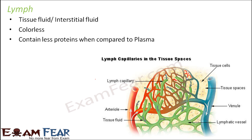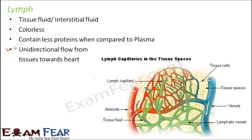So lymph is not a different fluid altogether — it is just a portion of plasma which leaks out from the thin capillaries into the tissue spaces. Lymph has a unidirectional flow, from tissues to the heart. In contrast, blood flow is bidirectional: oxygenated blood flows from the heart to different tissues of the body, and deoxygenated blood flows from the tissues back to the heart to be sent to the lungs. But in the case of lymph, it only flows from tissues towards the heart; the opposite direction does not take place.